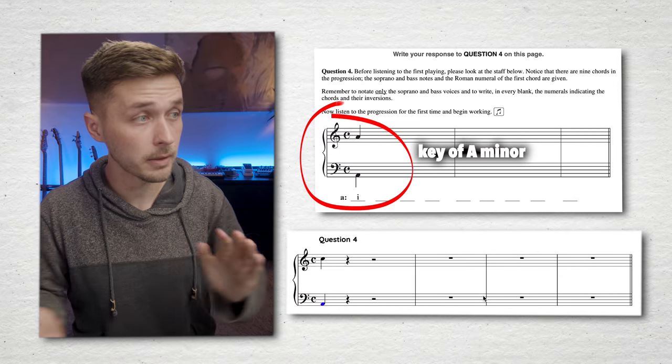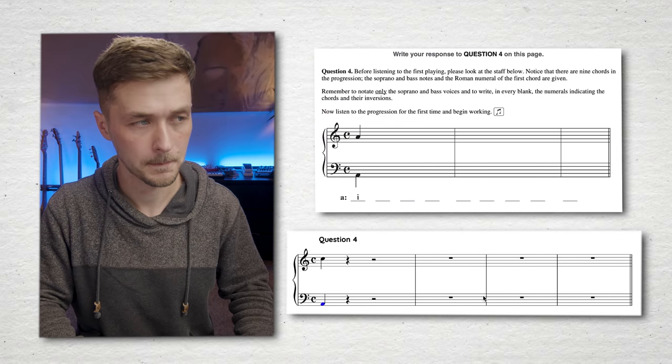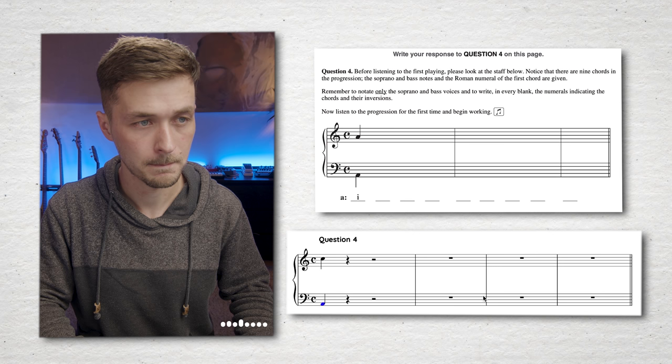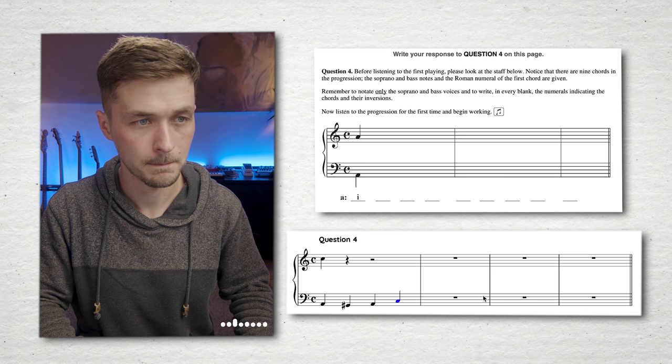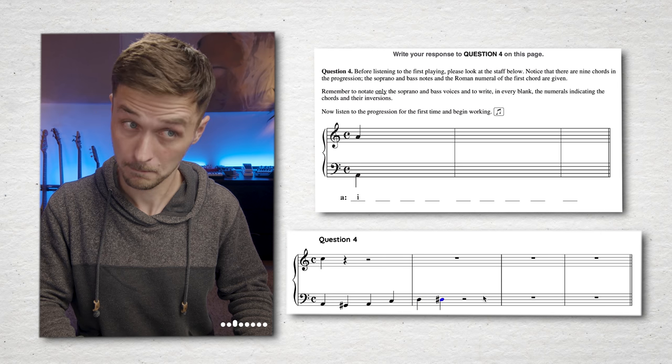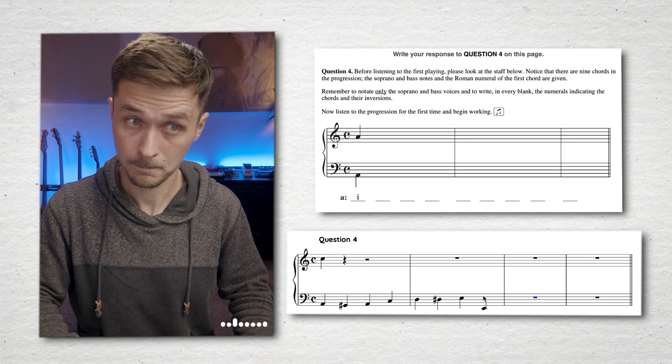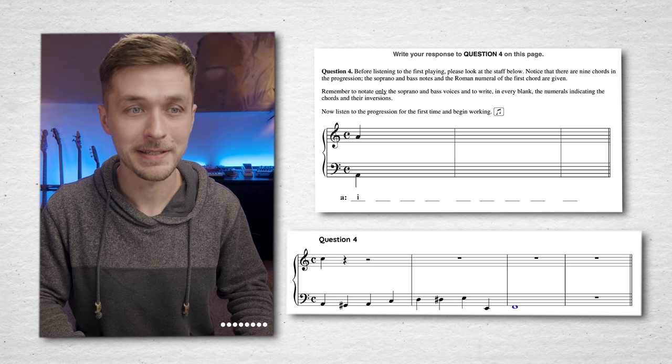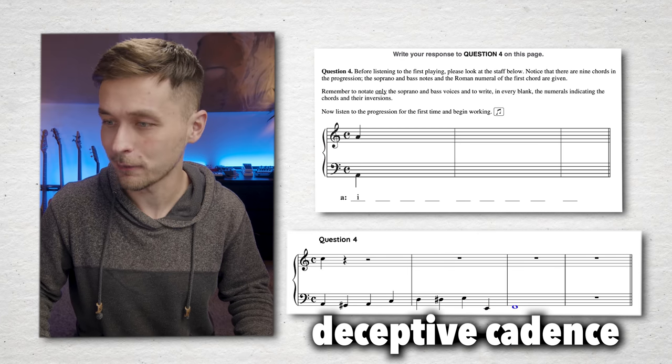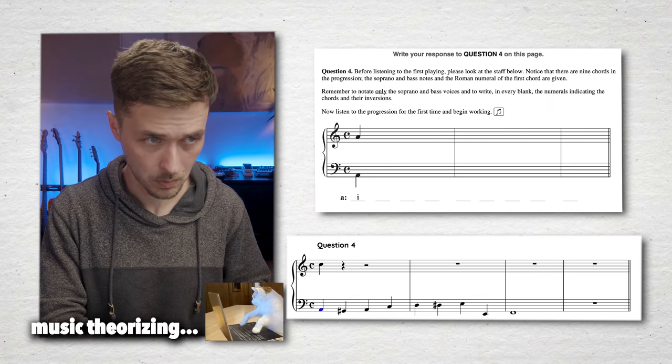Question four is another one, but now we're in minor keys, which are always, you know, they're the spicier tonal center. There's just more, more stuff that can happen in a minor key. Okay. It looks like we're in the key of A minor. Now listen to the progression for the first time and begin working. It's one of those things at the end, we got that deceptive cadence to a F. It's like, everybody's like, it's deceptive because in this time period, you would normally expect to go from that five chord, that E to the one minor, but instead we went to the six chord.